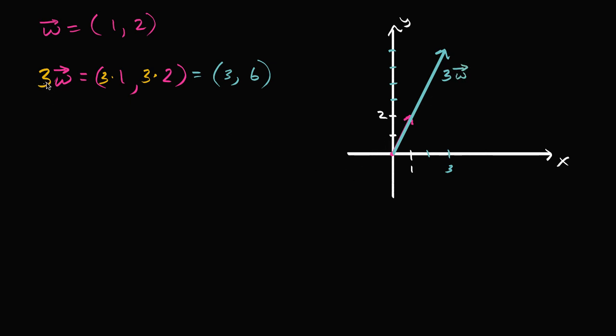Now notice what happened when I multiplied it by the scalar. The direction didn't change, but the magnitude did. And you see what the magnitude changed by. It increased by a factor of three. The length of my blue arrow now is three times the length of my magenta arrow.